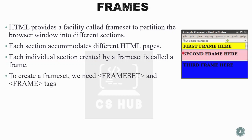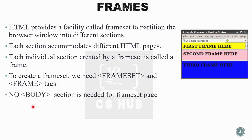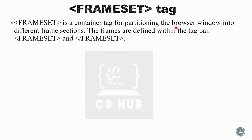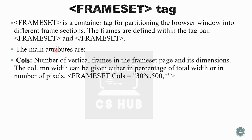Each individual section created by a frameset is called a frame. Together they are known as framesets. To create a frameset we use the frameset tag, and inside it we use different frame tags. No body section is needed for frames — we go from HTML, head, title, directly to frames. The frameset tag is a container tag for partitioning the browser window into different frame sections. The major attribute cols specifies the number and dimensions of vertical frames in the frameset page.